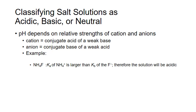So what happens if the cation can act as a weak acid and the anion of a salt can act as a weak base? Then the pH of the solution depends on the relative strength of the cation and the anion. For example, ammonium fluoride, NH4F — ammonium is the conjugate acid of the weak base ammonia and generally turns solutions acidic, while fluoride anion is the conjugate base of the weak acid HF and generally turns solutions basic. A comparison of the relative magnitude of the Ka value for ammonium and the Kb for the fluoride ion indicates that the ammonium ion is a stronger acid than the fluoride ion is a base. As a result, the solution of ammonium fluoride will be acidic overall.